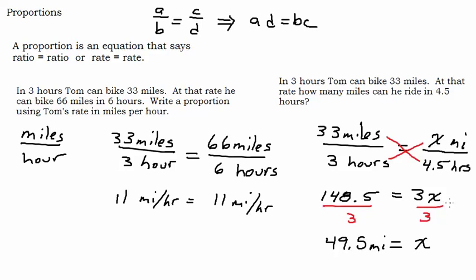The key to setting up a proportion is consistency with your labels. If you're using a rate equals a rate and miles are in the numerator and hours are in the denominator, it must be consistent on both sides of the equal sign. Same with flour and sugar — if cups of flour is in the numerator, it must be in the numerator on both sides, and sugar in the denominator. Writing the labels out when you start helps you stay consistent, and using the cross product rule makes solving quick and easy.